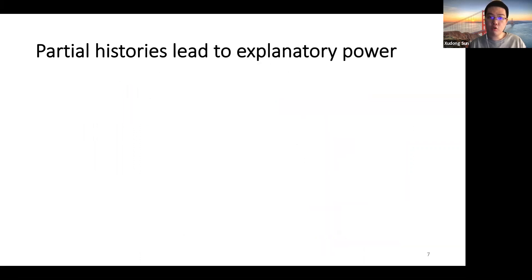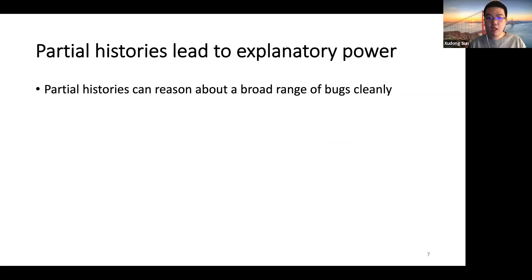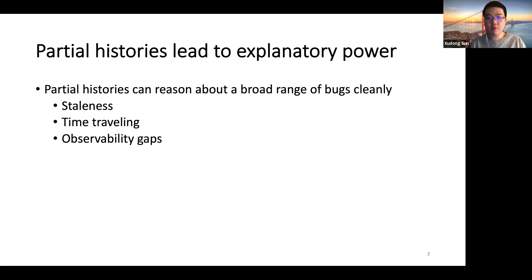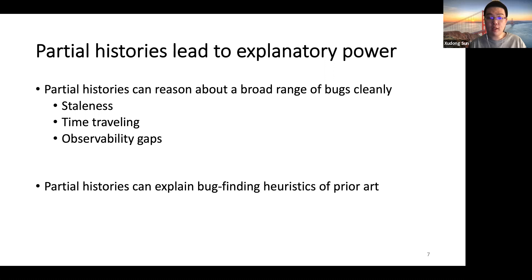I will further show you that partial history can lead to immense explanatory power — that they can reason about a broad range of bugs cleanly using three patterns: staleness, time traveling, and observability gaps. Besides, partial history can also explain bug-finding heuristics of prior art.